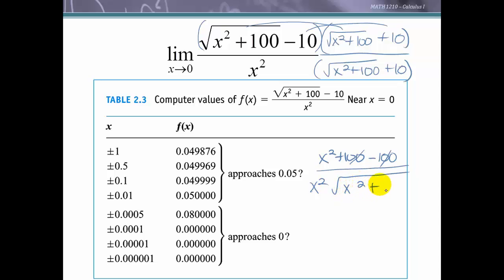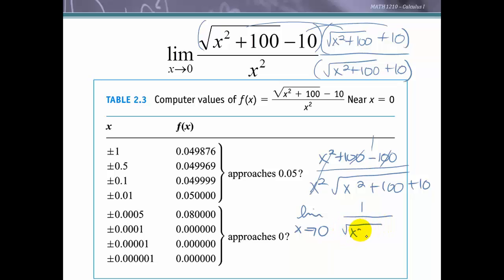After the x² terms cancel, we get an equivalent function — differing only in its domain — of 1 over (√(x² + 100) + 10). Now we can evaluate the limit as x approaches 0 using direct substitution, plugging in 0 to get 1/20, which in decimal form is 0.05. Our original function has a hole at 0, but this confirms the limit is 1/20.